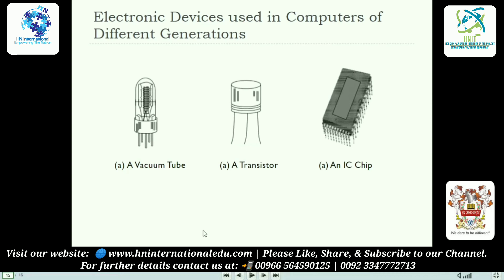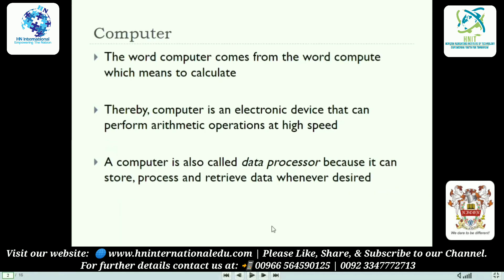In the next generation, transistors were used — these amplify signals. Then came IC chips — Integrated Circuits. When you open your mobile or hardware, you find small ICs with legs embedded on a board. In ancient times ICs were very big; now they have become very small. The main point of today's lecture was about computers as data processors — how they are used, how we can take advantage of them, and what the main building blocks of computers are.